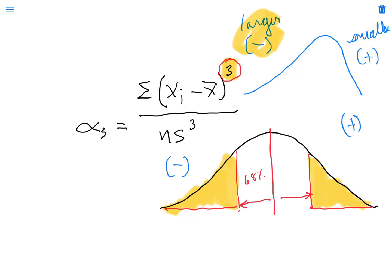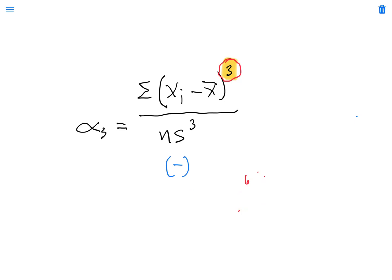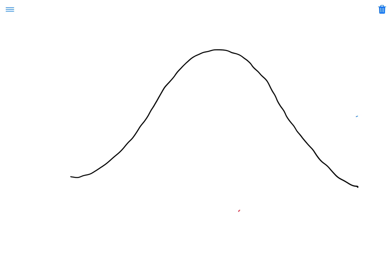So let's take a look, just examples again, just to reinforce what we're talking about here. If I have a distribution that looks like this with no tails, I'm going to have an alpha sub 3 approximately equal to 0, and that would indicate no skew.